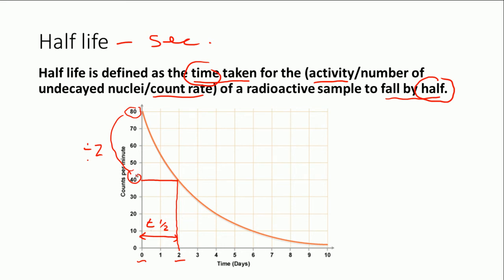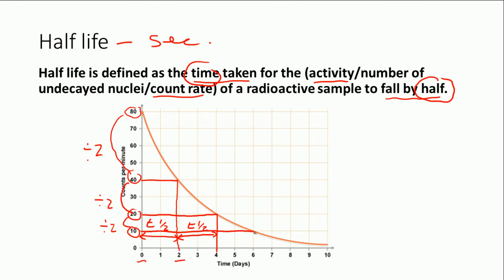One of the things about nuclear decay is that it doesn't matter where you start. So if you wanted to start at 40, you could halve that again and go down to 20. Then you go along to the line and figure out what the time interval was between 40 and 20 — you can see it's the same, so that's another half-life. And if we do it a third time, we go from 20 to 10. You come along to the line from 10 all the way along and down to the axis, and again you have two days — a third half-life.